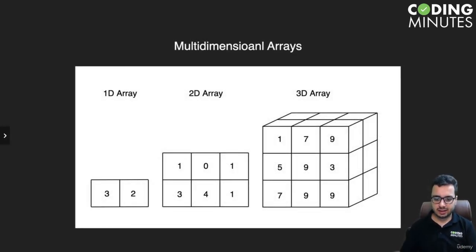A 1D array is something that we have seen. A multi-dimensional array means it has more than one dimension, so it can be a 2D array, a 3D array, a 4D array, or even an N-dimensional array.